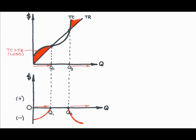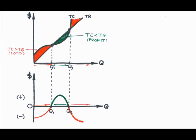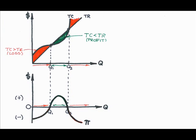This leaves us with output levels from Q1 to Q2. In this range, total revenue exceeds total cost, so profits are earned. Now that we have an idea what profit looks like at different levels of output,